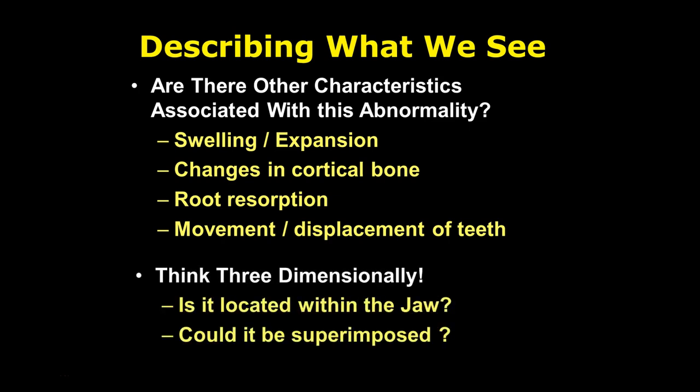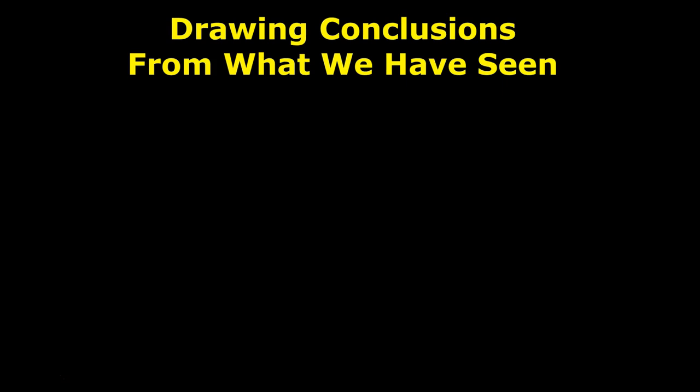Think three-dimensionally as well. Is the finding located within the jaw bone, or could it be soft tissue superimposed over the bone? You're dealing with a two-dimensional image where depth is lost. It's almost like a steamroller effect — you have a flattened image, but all the anatomical characteristics are present, just stacked on top of one another.